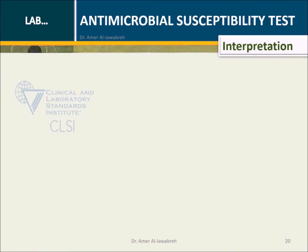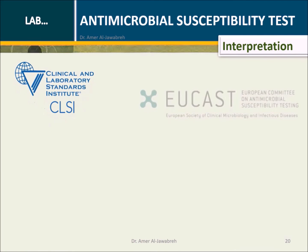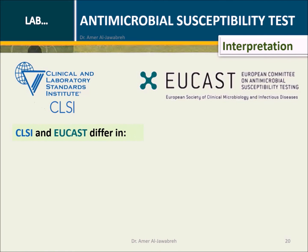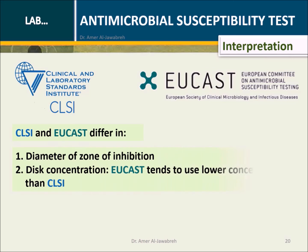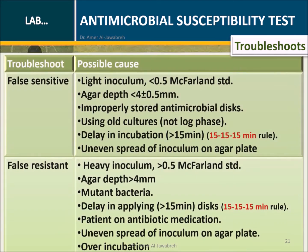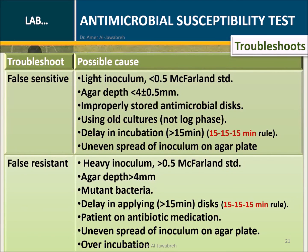CLSI and EUCAST differ in: 1. Diameter of zone of inhibition, and 2. Disk concentration — EUCAST tends to use lower concentrations than CLSI. A troubleshooting table showing common problems and their possible causes is also provided.